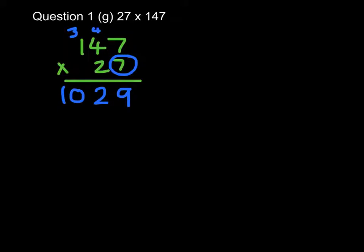I'm now going to multiply by 20. It's 2 groups of 10. So I'll put down a 0 at the start. 2 times 7 is 14, put down your 4, carry your 1. 2 times 4 is 8, add 1, 9. And 2 times 1 is 2.